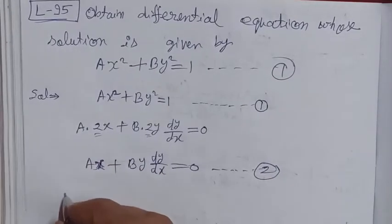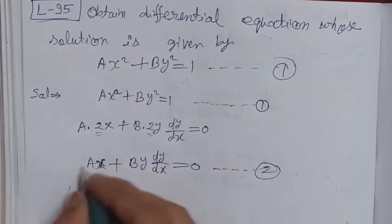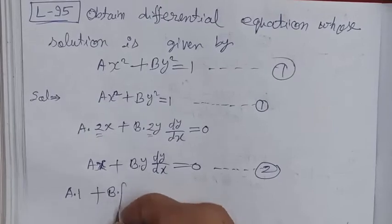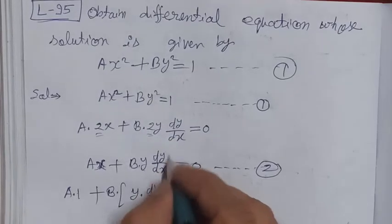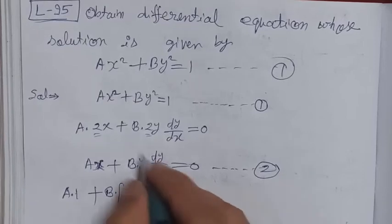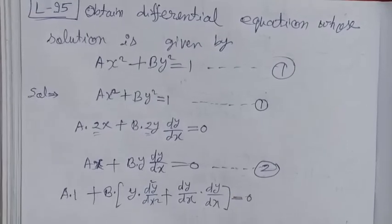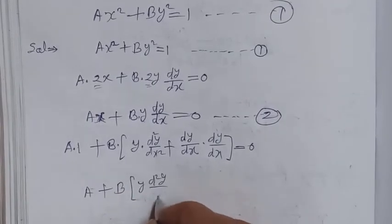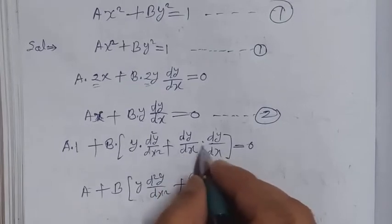Now differentiating equation 2 with respect to x: a is a constant so differentiation of x gives 1, plus b times — applying the product rule to y(dy/dx) — first function as it times differentiation of second gives d²y/dx², plus second function dy/dx times differentiation of first gives (dy/dx), equals 0. So we get: a + b[y(d²y/dx²) + (dy/dx)²] = 0, which is equation number 3.